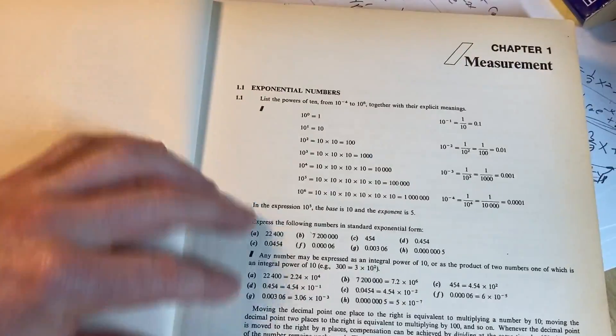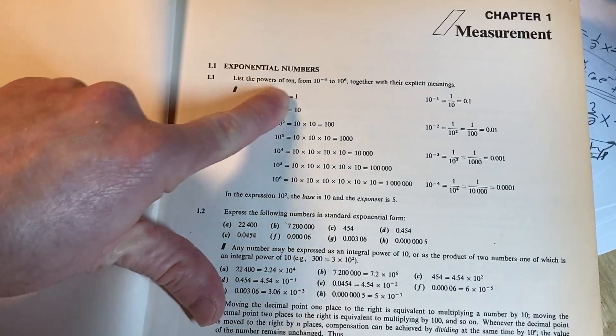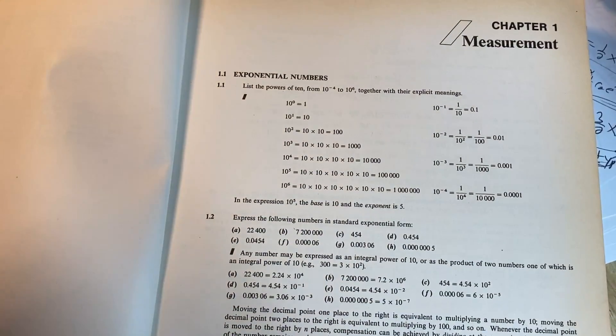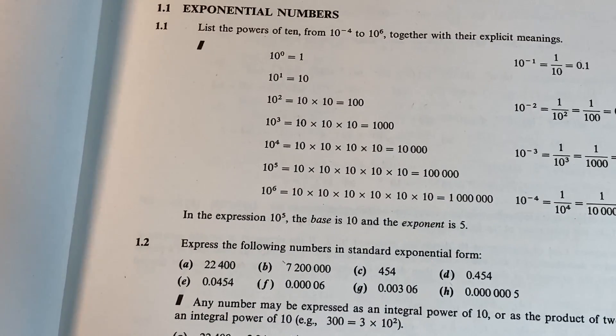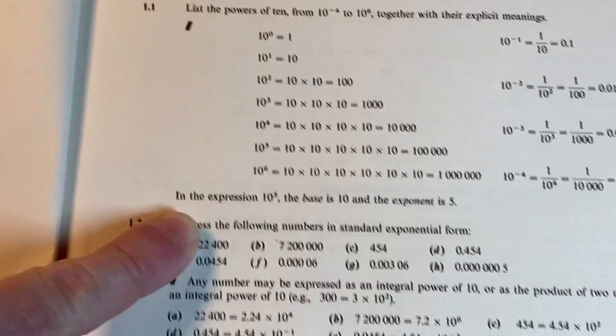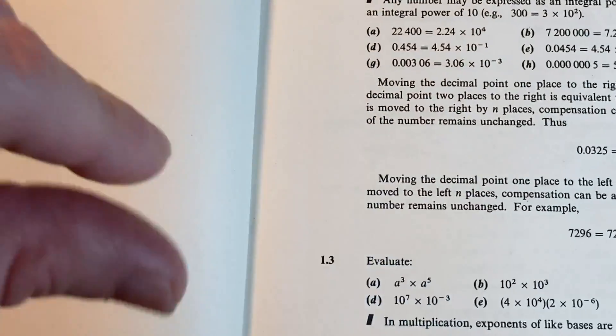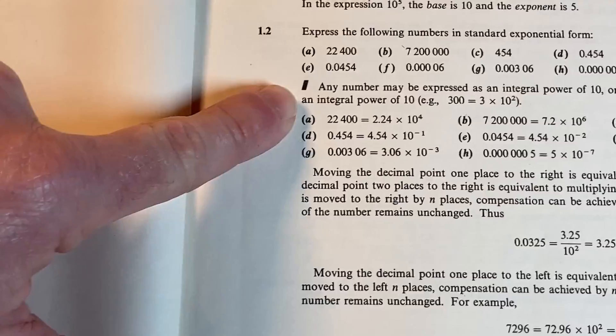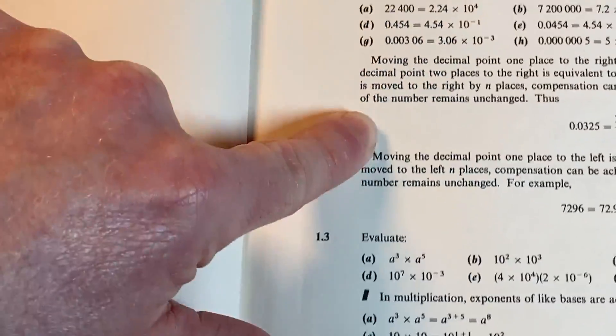And here it starts. So you can see, this is the powers of 10, from 10 to the negative 4, to 10 to the 6, together with their explicit meanings. And you see, it just does it for you right there. And then here is another one. So this little box means it's the answer. So you have the questions and you have the answers. Questions and answers.